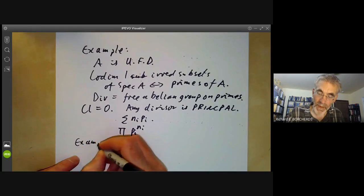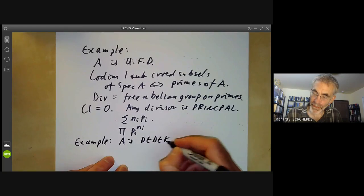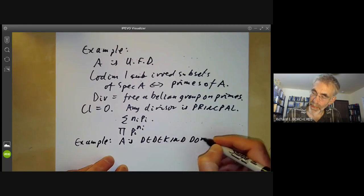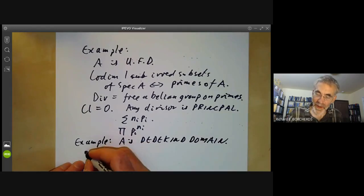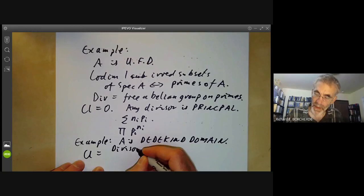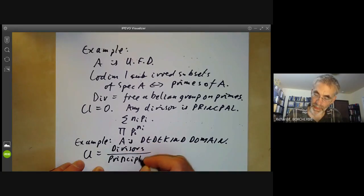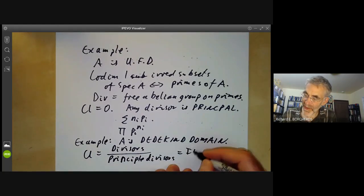For an example where it's not trivial, suppose A is a Dedekind domain. Then the ideal class group, which is the divisors modulo principal divisors, is exactly what number theorists call the ideal class group.